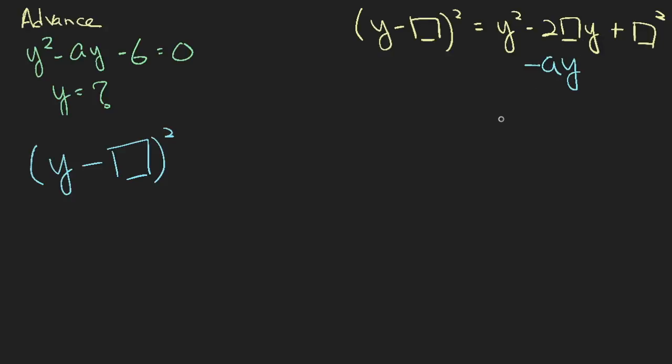From here, we can infer that minus two blank equals minus a, and therefore your blank equals a over two. So we have found out what is the term inside your blank, and we know that it is a over two.